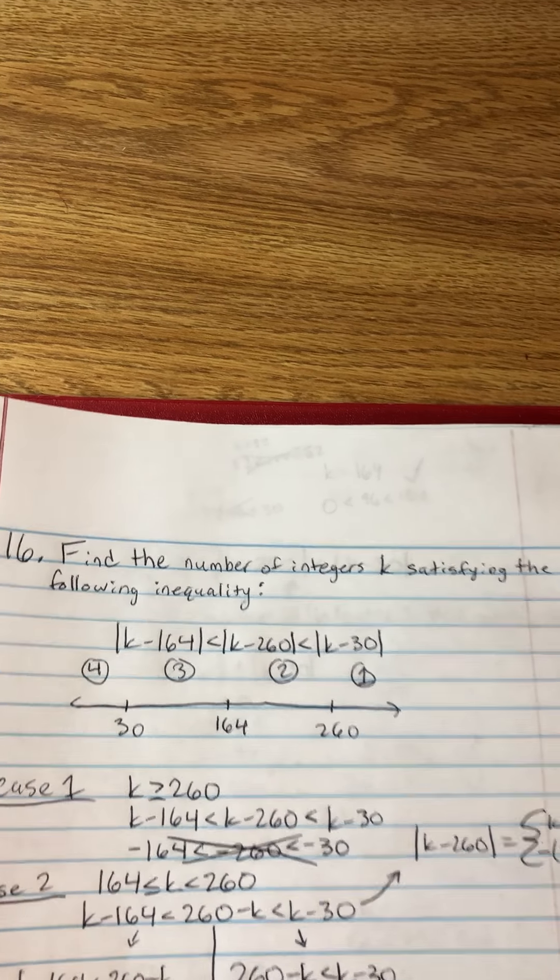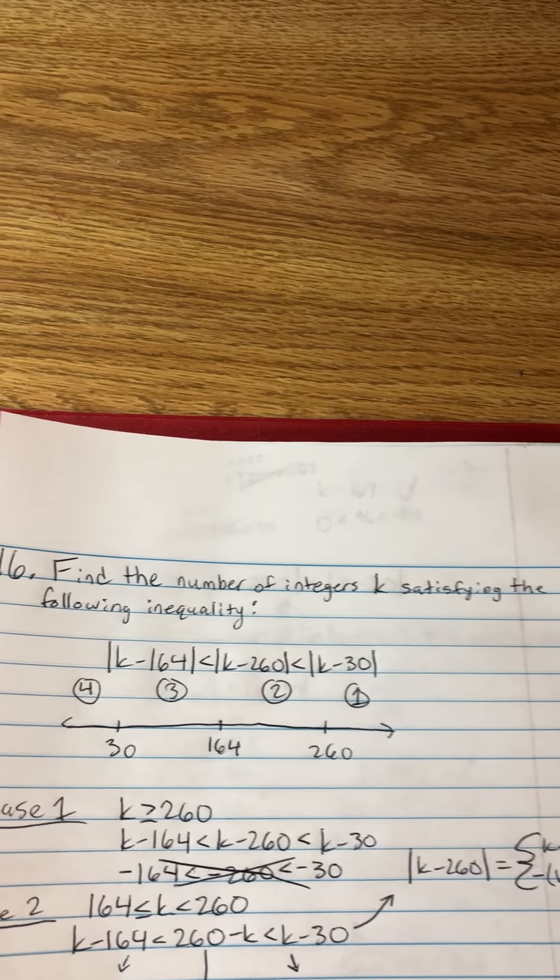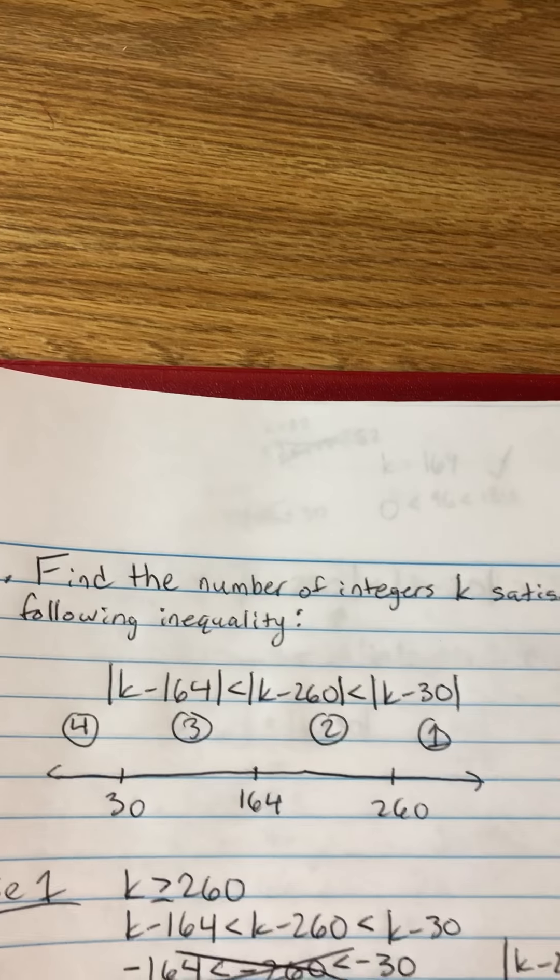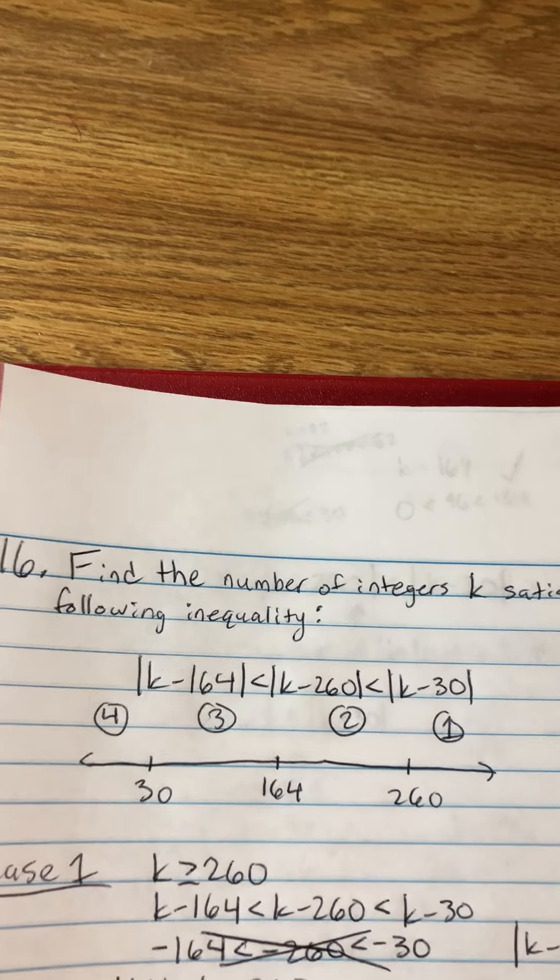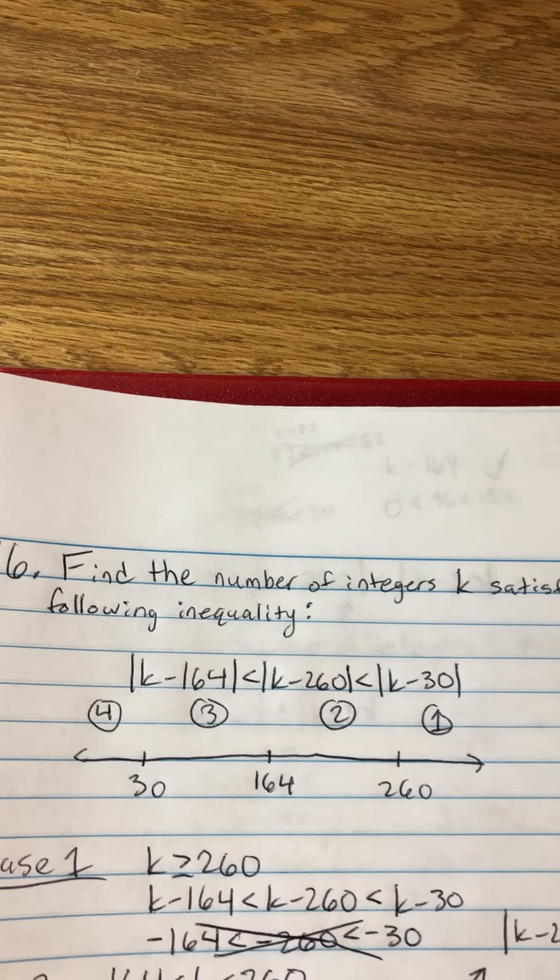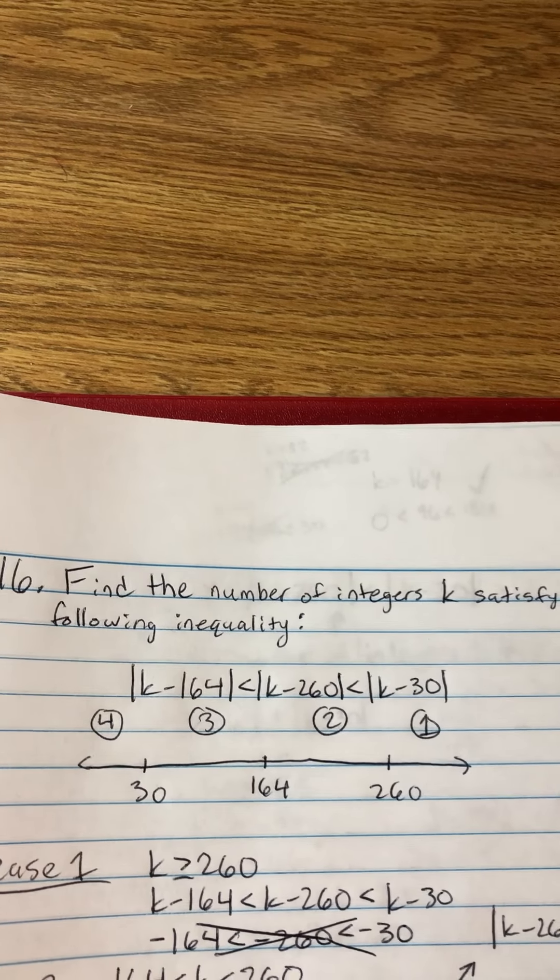So I had problem number 16, which says find the number of integers k satisfying the following inequality: the absolute value of k minus 164 is less than the absolute value of k minus 260, which is less than the absolute value of k minus 30.